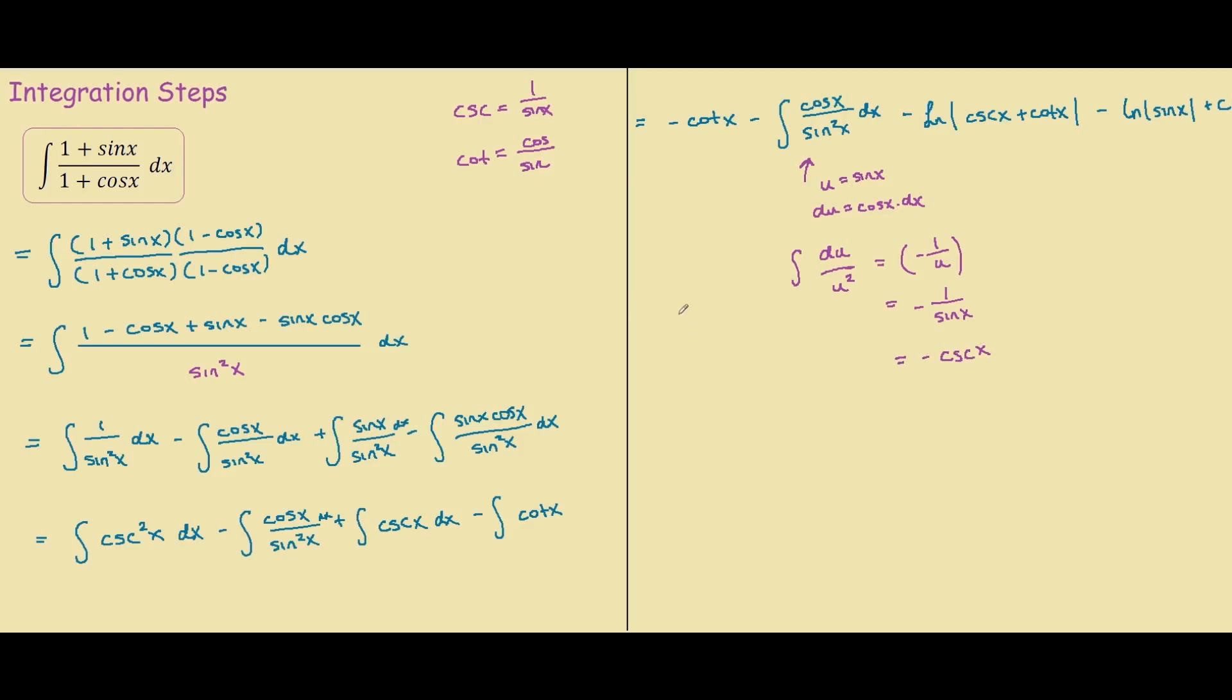So now I'm going to rewrite our solution more neatly. We have negative cotangent x minus negative cosecant, so plus cosecant x, and we have negative ln of cosecant plus cotangent minus ln of sin x plus cosecant x plus C.